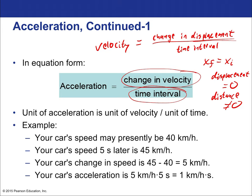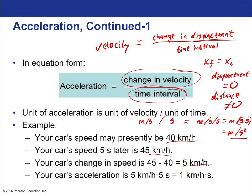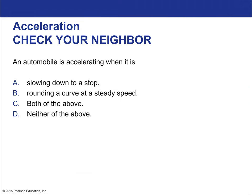The unit of acceleration is unit of velocity over unit of time. Velocity is meters per second, and time is seconds, so the units are meters per second per second — which becomes meters per second squared. For example, if your car's speed is 40 kilometers per hour and five seconds later it's 45, your change is 5 km/h and your acceleration is 1 km/h per second. That's why we prefer to express it in meters per second squared.